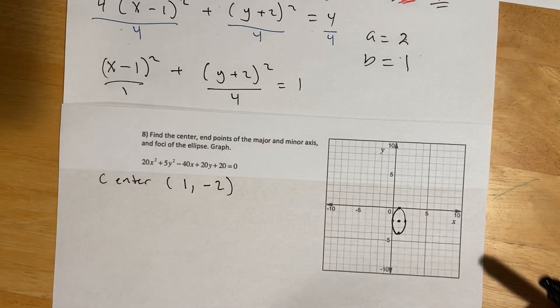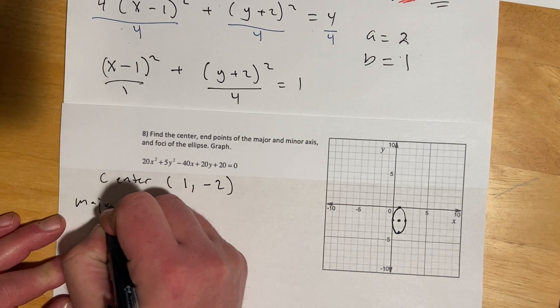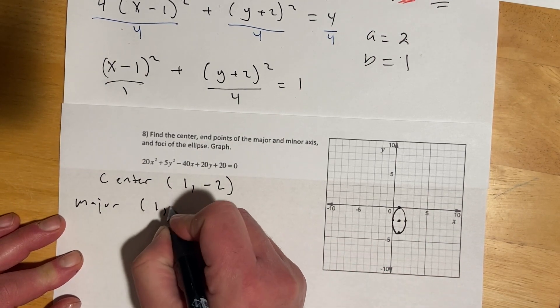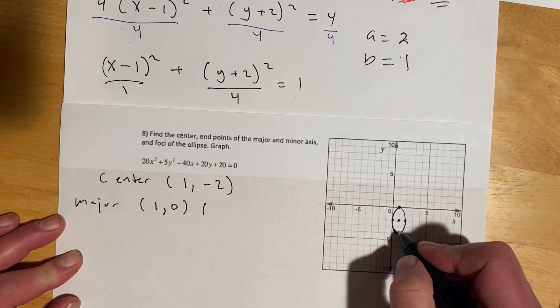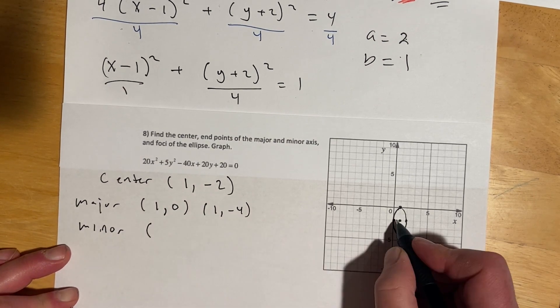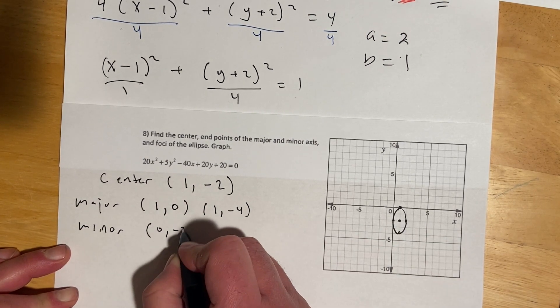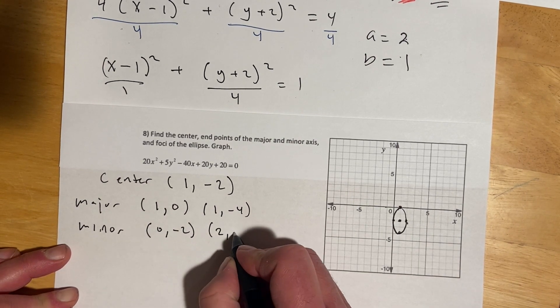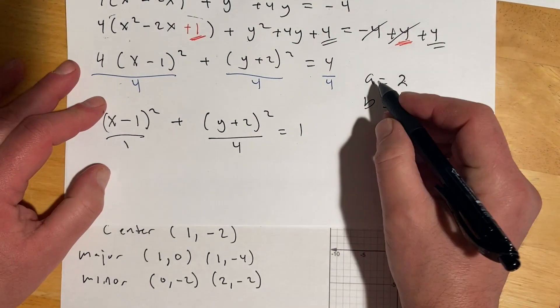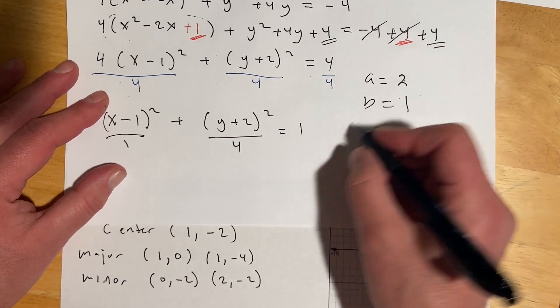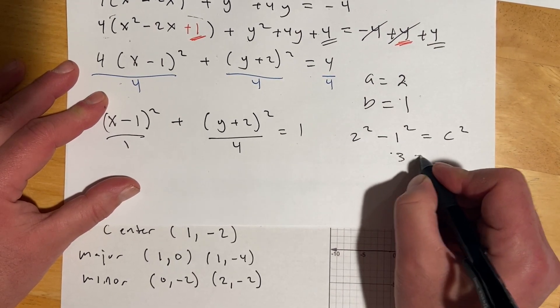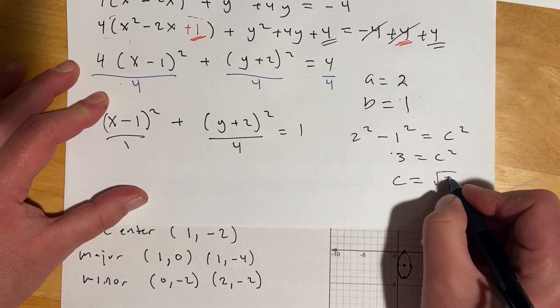So, now, it's asking for the major and minor vertices. So, major is going to be here and here, because that's the long distance version. So, that's going to be 1, 0, and then 1, negative 4. And then, minor, so that's going to be the short direction. So, this one is at x is 0, y is negative 2. And this one is at x is 2, y is negative 2. And then, we've just got to get the foci. So, then, coming back here, I'll do a squared minus b squared equals c squared. So, 2 squared minus 1 squared equals c squared. So, 4 minus 1, that would be 3 equals c squared. And c equals root 3.